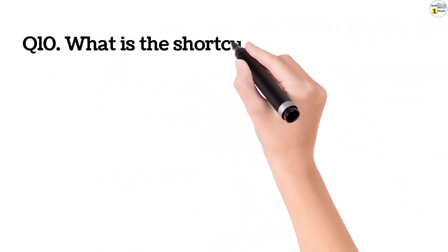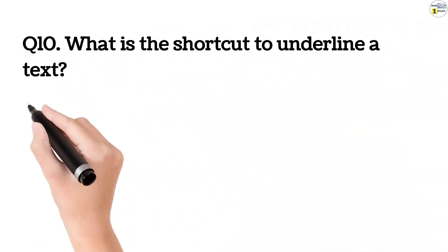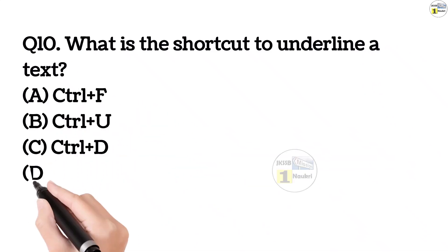Question number 10. What is the shortcut to underline a text? Option A, control plus F. Option B, control plus U. Option C, control plus D. Option D, control plus C.